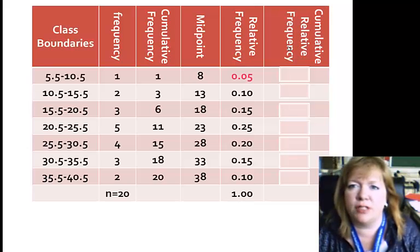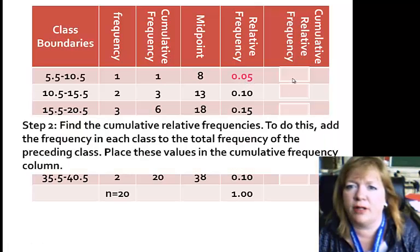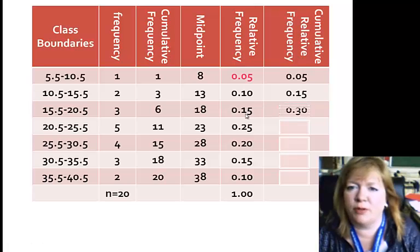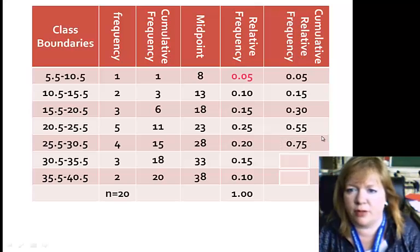Cumulative relative frequency. You do just like you did the cumulative frequency. So we're going to start off with .05, and then we're going to add it to the .10, put that over to the right, add that one to .15, put that over to the right, and so on. So we start with .05, .05 plus .10 is .15, .15 plus .15 is .30, and you get the gist.